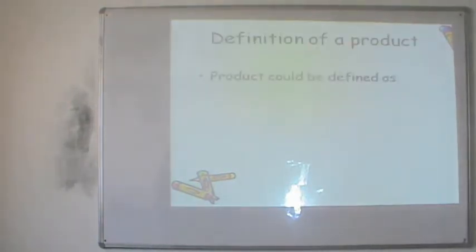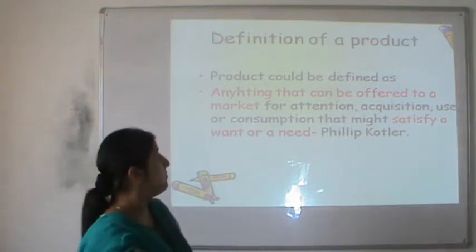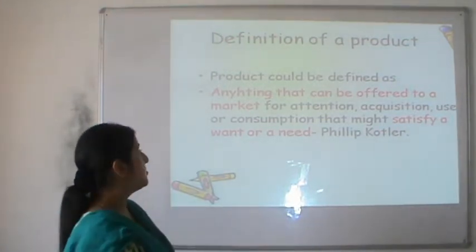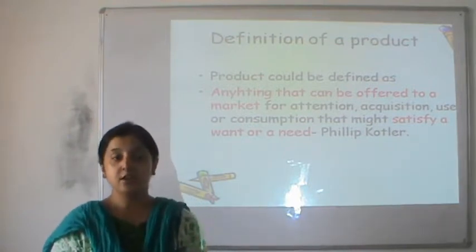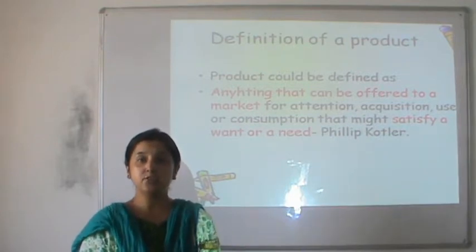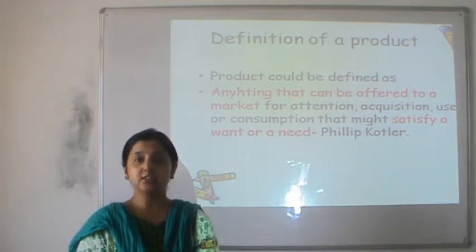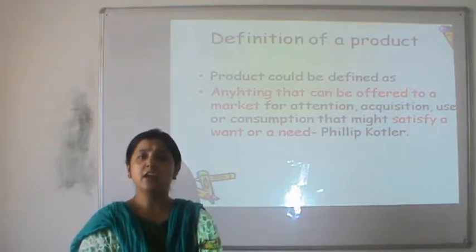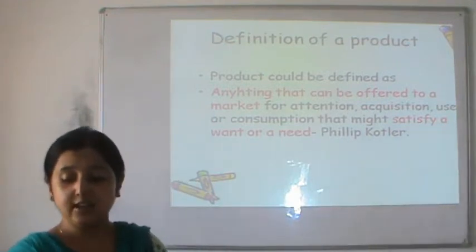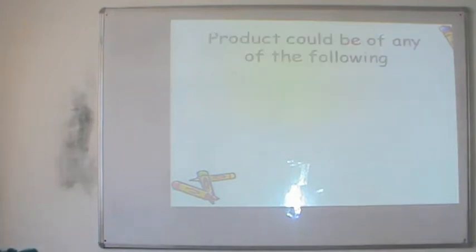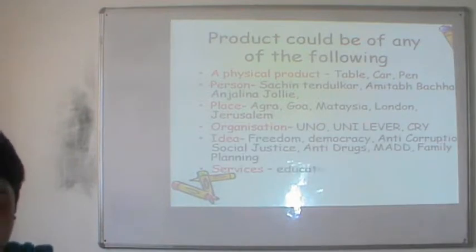Let's start with understanding what a product is. Anything that can be offered to a market for attention, acquisition, use, or consumption that might satisfy a need or a want is what can be a product. In today's time the scope of marketing has exceeded across boundaries, and it is almost possible to sell and market every other thing and commodity present in the marketplace. The next slide helps us understand the various types of categories that can be marketed as an offering.